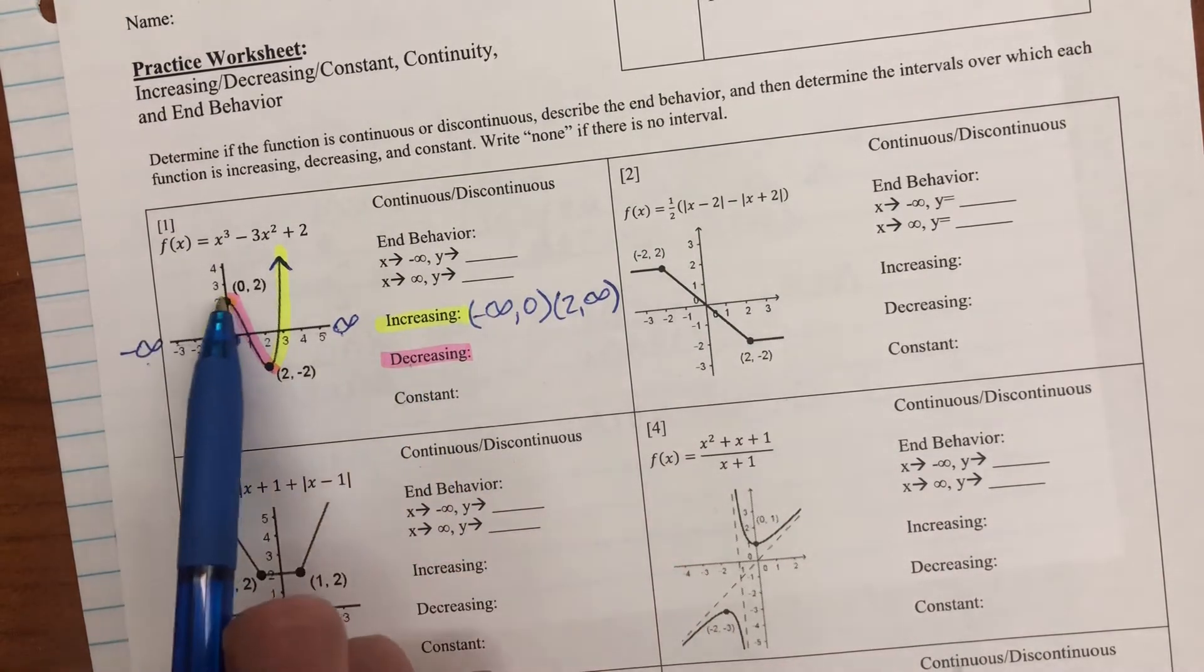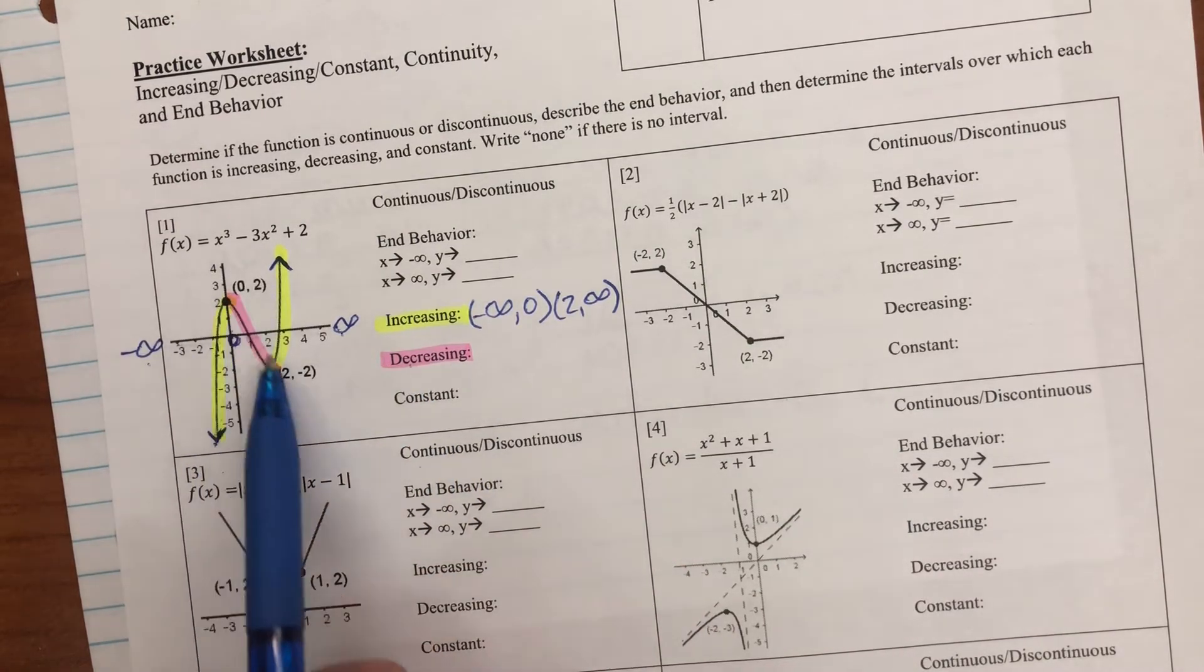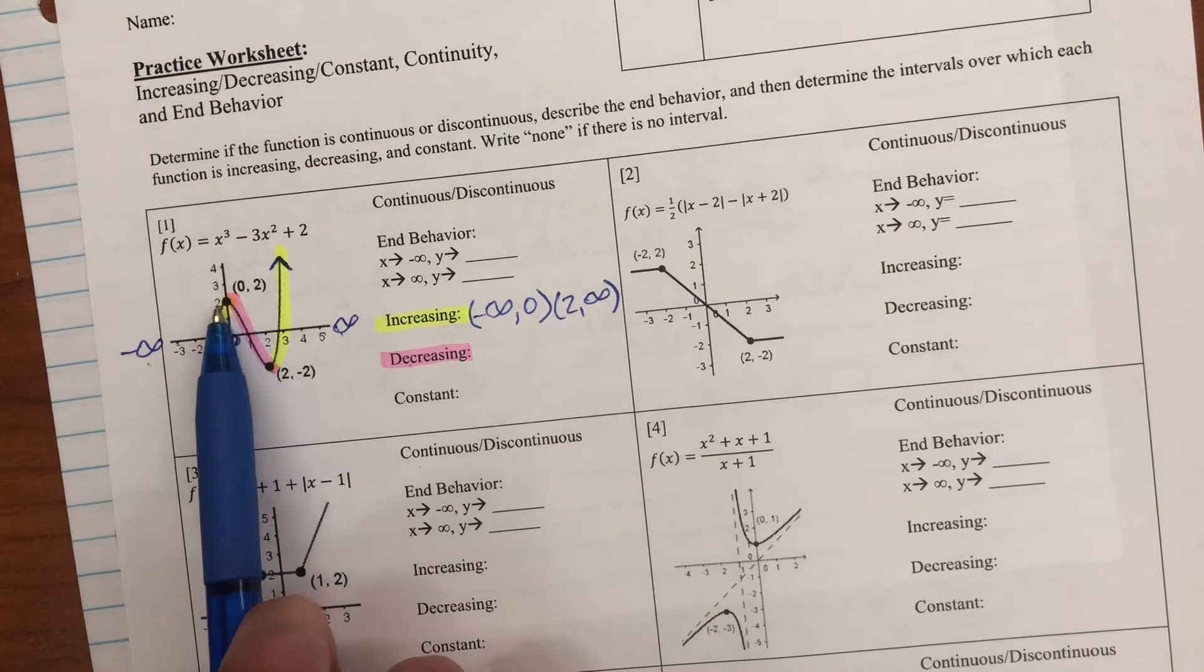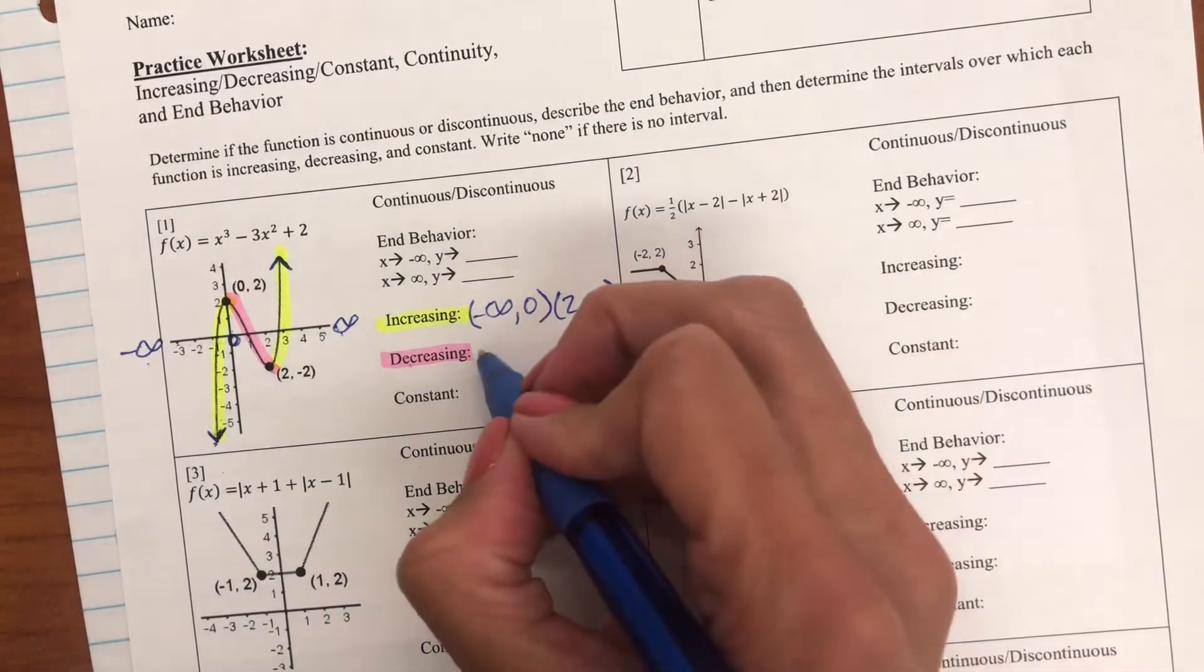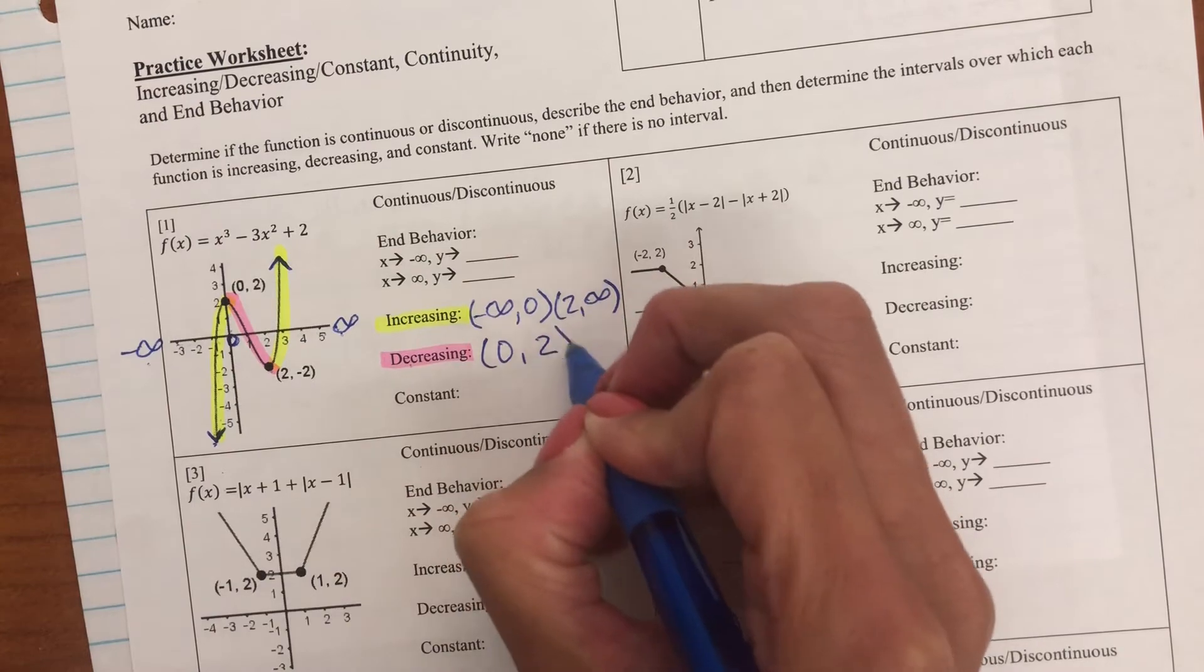Decreasing. Decreasing is in pink here. It's going down here. I'm using my x value. The x value here is zero, and then the x value here is positive two. Zero to two.